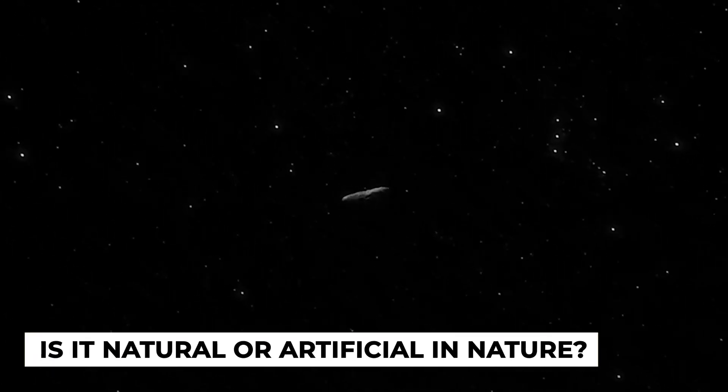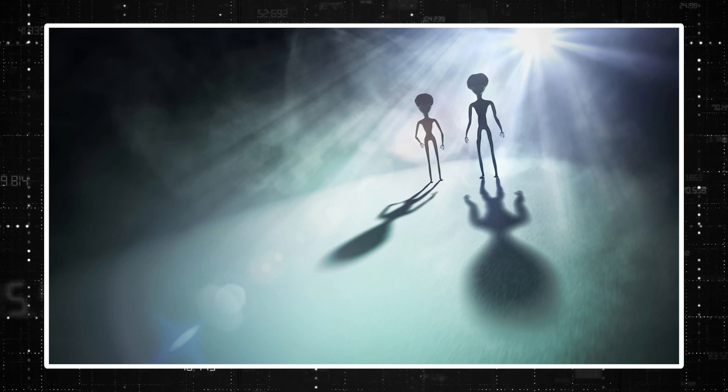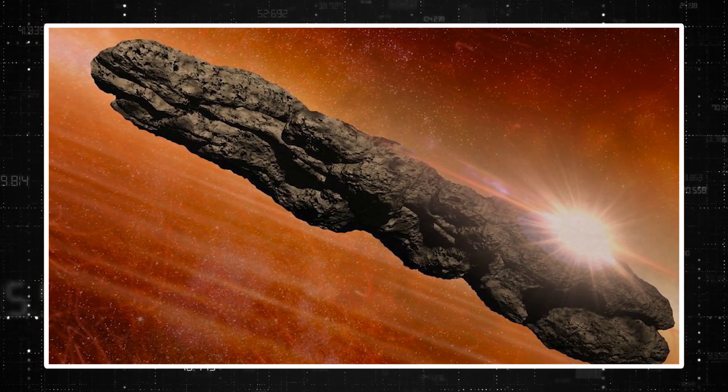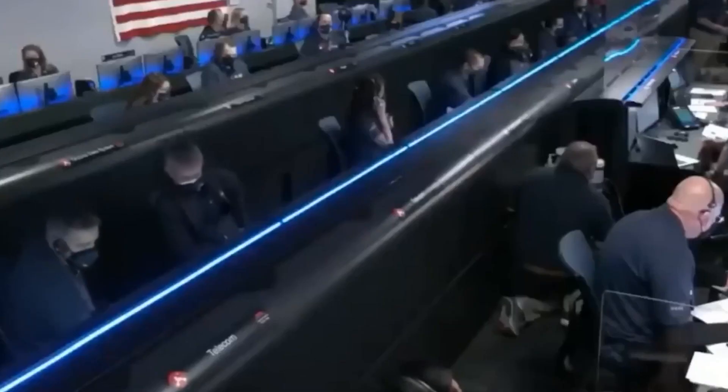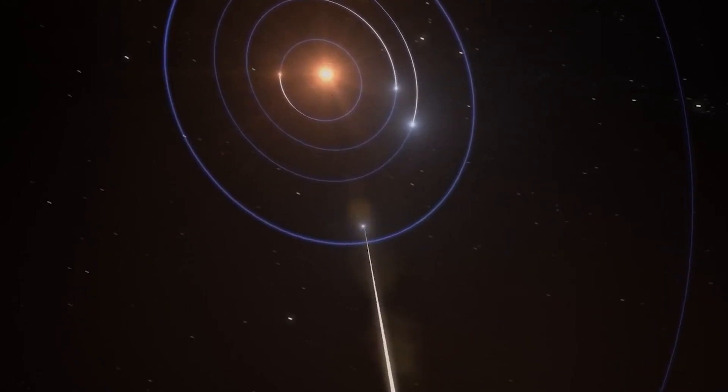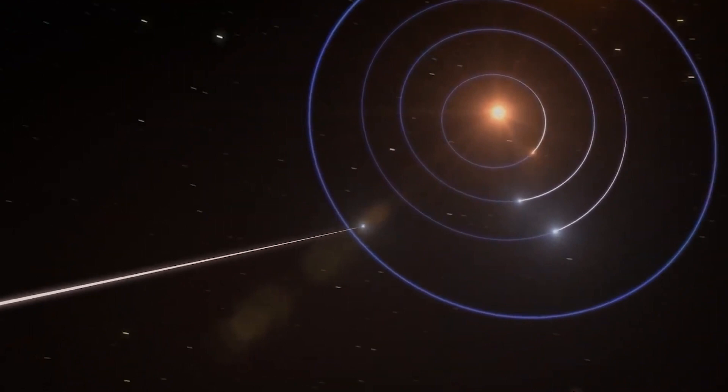What really is Oumuamua? Is it natural or artificial in nature? Is it a sign of an intelligent species out in the deeper regions of space? Or is it just a uniquely shaped comet moving through the cold void of the universe? What were our scientists able to understand from our mysterious interstellar visitor? And what questions still remain as questions to this day?